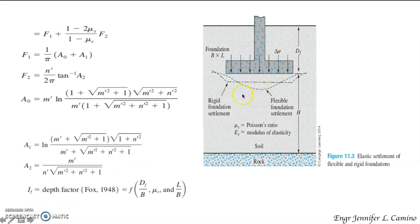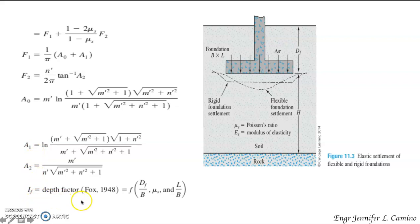The figure represents the elastic settlement of flexible and rigid foundations. The shape factor is given by: F1 + [(1 − 2μs)/(1 − μs)] × F2. To solve for F1 and F2, you use the provided equations involving A0, A1, and A2. The depth factor If is a function of Df/B, μs, and L/B. You need to determine m′ and n′ to compute A0, A1, and A2, which are needed to compute F1 and F2 for the shape factor.